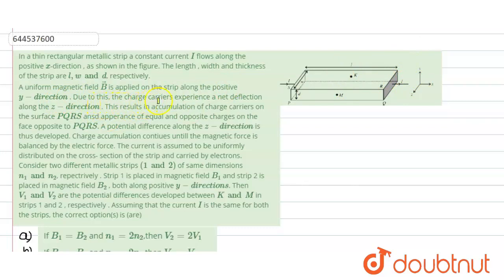Now due to this, there is a charge accumulation which is experienced which experiences a net deflection along the z direction. And where is the accumulation of charge? It is on the surface PQRS and equal and opposite charge on the face opposite to PQRS. That means on this face and this face there is charge accumulation. There is also a potential difference which is developed along the wire. Why? It is developed due to the accumulation of the charges.